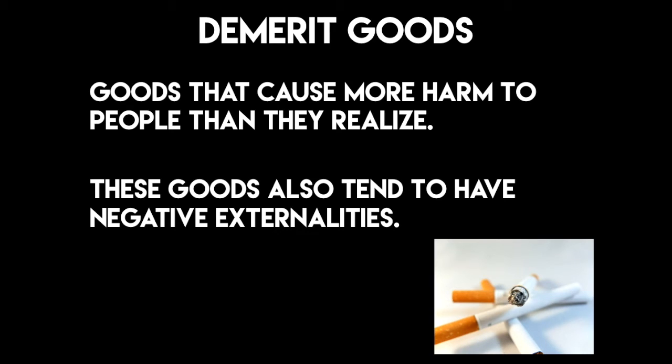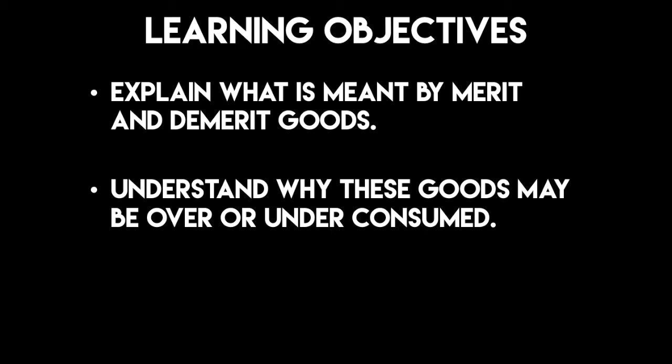So we've seen merit goods and demerit goods. Merit goods tend to give rise to positive externalities and demerit goods tend to give rise to negative externalities. You should walk away from this video understanding what an externality is, as well as the definition of merit and demerit goods with examples, and understand why they may be over-consumed or under-consumed based on consumer information. We don't understand how valuable education is, so we tend to under-consume it — if we saw the true value of education, maybe more people would go to school. Similarly, with smoking and cigarettes, if we really understood the harm we were causing ourselves and society, arguably we would consume less.